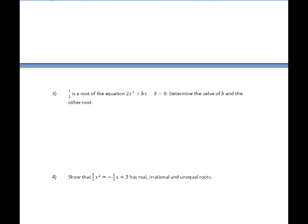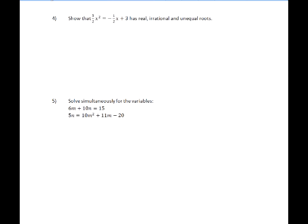And finally, let's take a look at question 4. Show that 3 over 2x squared equals negative 1 half x plus 3 has real, irrational and unequal roots. So they are asking you to show what the roots of this equation is like. So this is a nature of roots question.